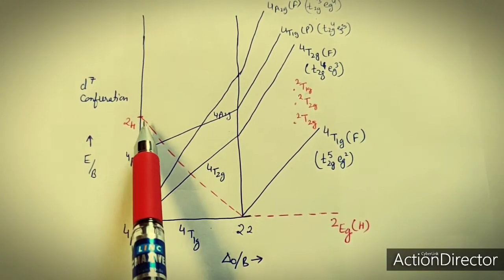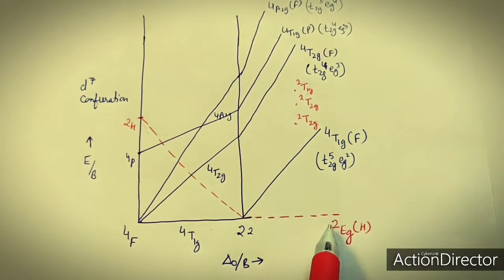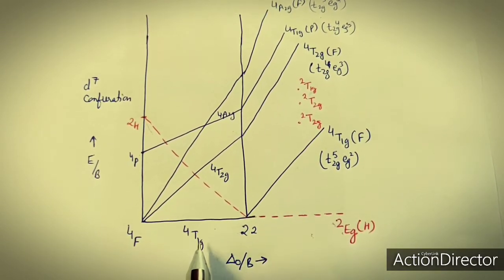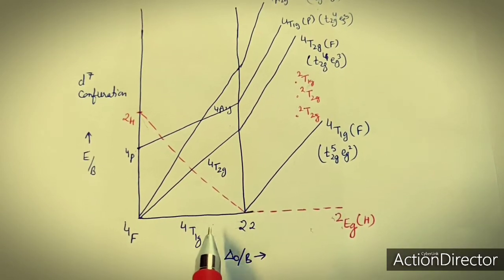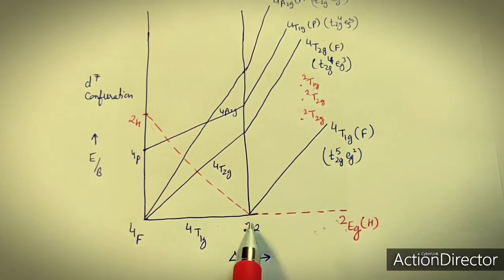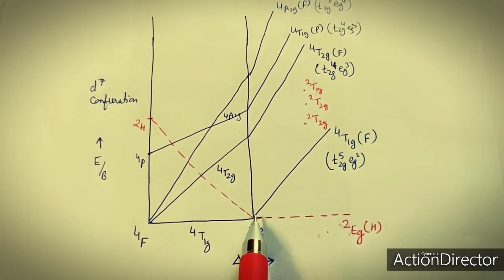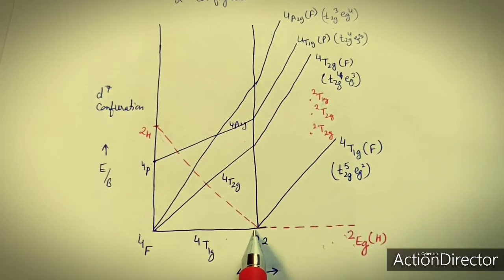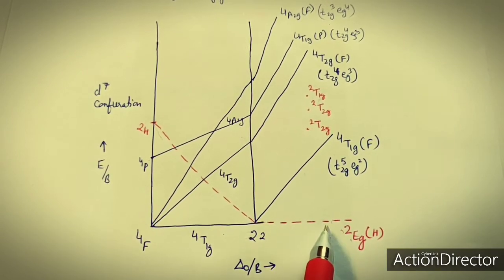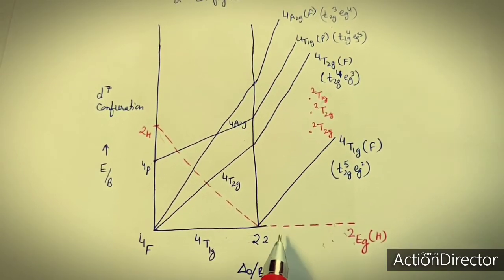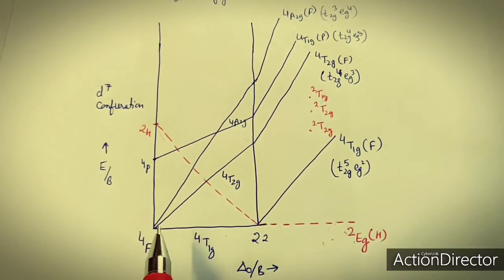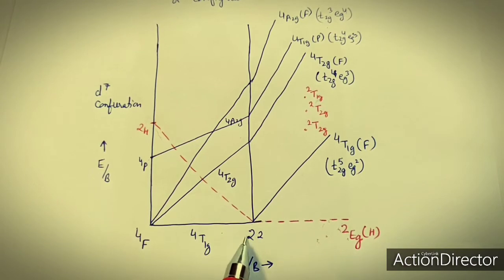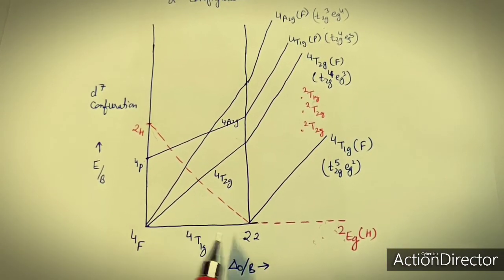After ΔO/B = 22, the ground state converts to the 2EG term, showing a crossover point where both weak and strong field complexes are in equilibrium. After 22, the complex is strong field — these are complexes with strong field ligands like carbonyl, nitrosyl, and cyanides. Before 22, the complex is weak field, with ligands like fluoride, H2O, and NH3.